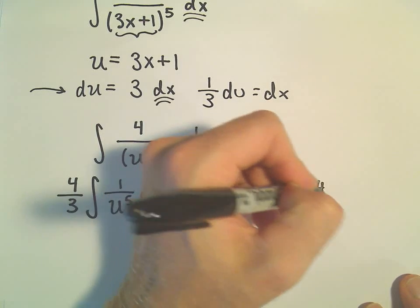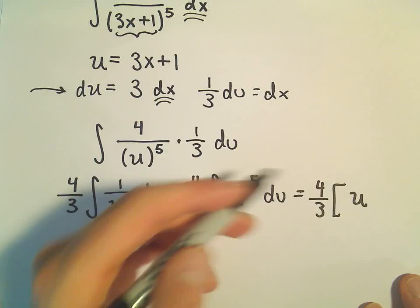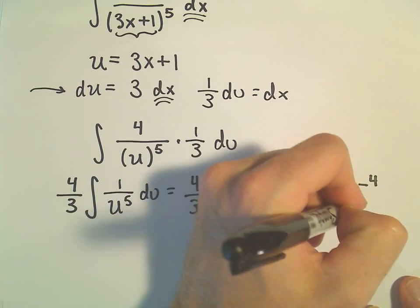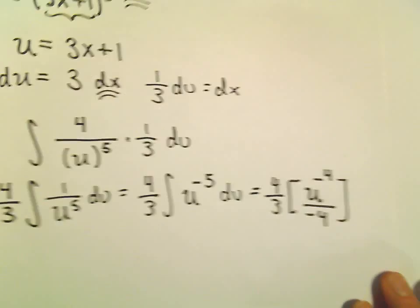So if I integrate, let's see, we'll have 4/3. We'll get u to the, let's see, we add 1 to the exponent, so that'll give us negative 4. Divide by that new exponent, negative 4. We have to put on our plus c here.